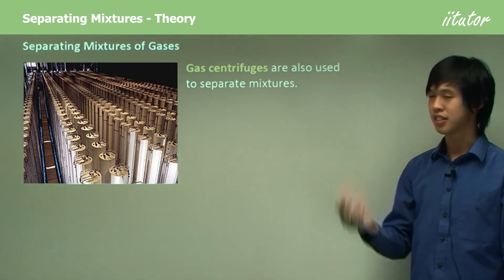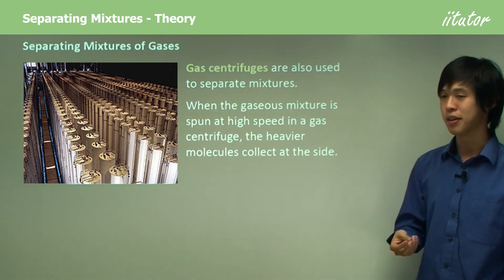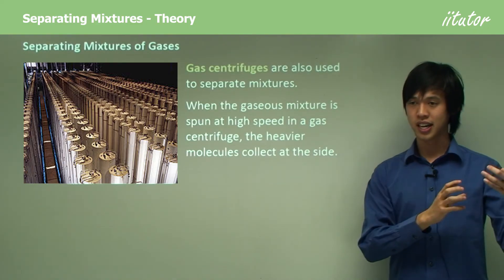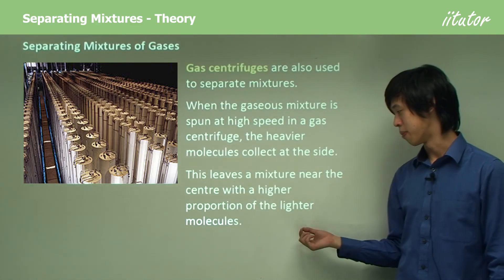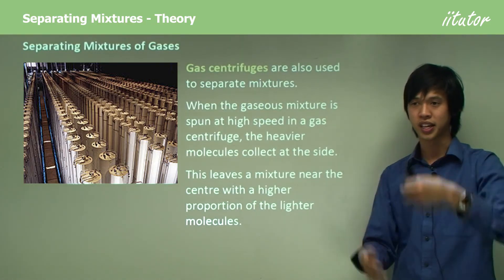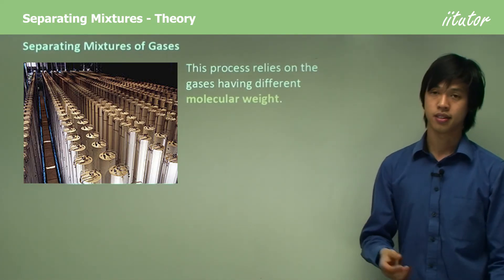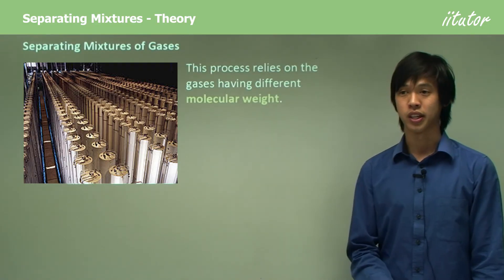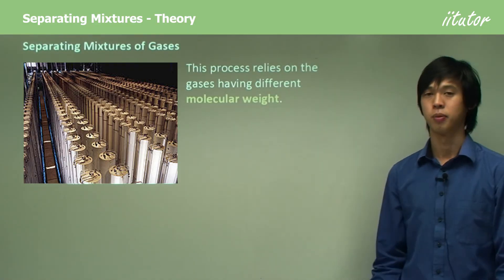Additionally, we can use gas centrifuges to separate gas mixtures. When the gaseous mixture is spun at high speeds in the centrifuge, the heavier molecules collect at the sides while the lighter ones remain in the middle — leaving a mixture near the center with a higher proportion of light molecules. This process relies on the gases having different molecular weights, and we use it in the production of some radioactive materials.